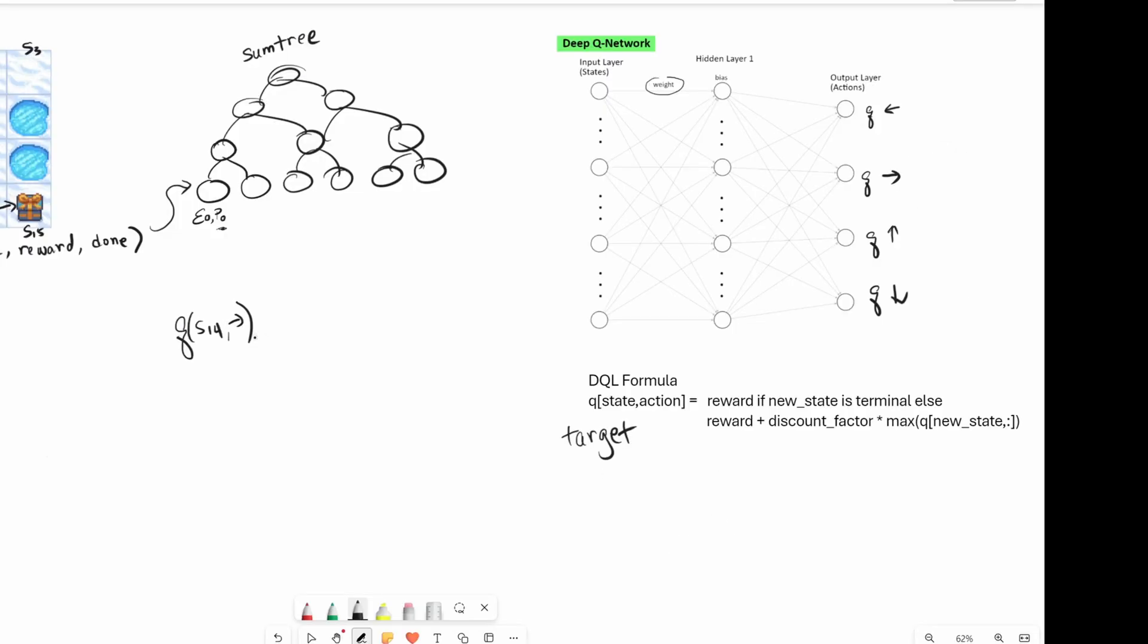Now there is already a Q-value associated with state 14 going to the right. This current Q-value, let me write current here. At the beginning, this is probably going to be somewhere near zero. I'll just put zero.